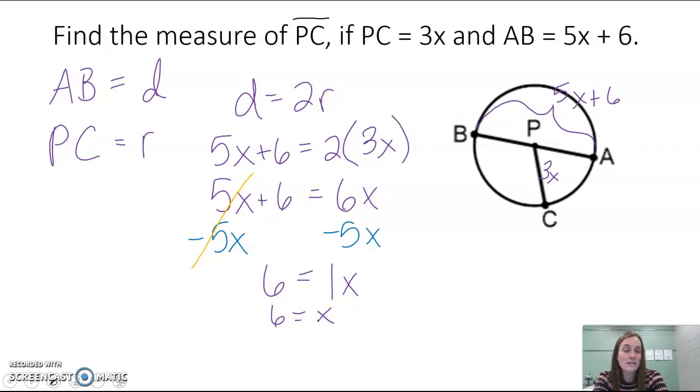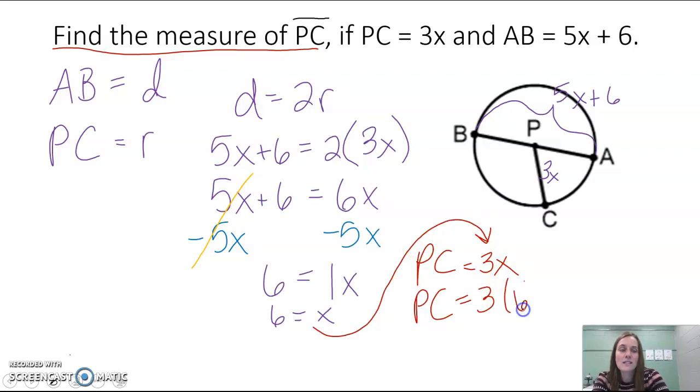So x is equal to 6, but that's not our answer. The problem here tells us to find the measure of segment PC. So remember PC is equal to 3x. And we just found out that x is equal to 6. So we're going to take 3 times 6, and so it's 3 times x,